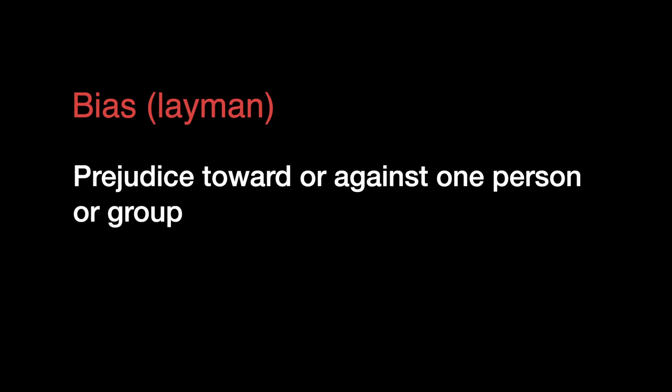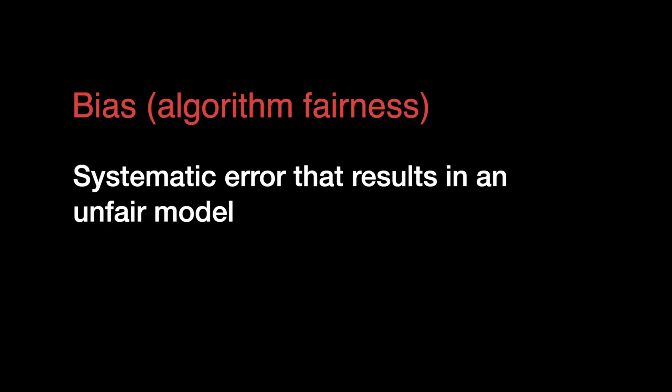Bias can be introduced during data collection, feature engineering, training, or even by the way you deploy your model. In day-to-day life, bias has a different definition: it is prejudiced for or against a person or group based on their characteristics. Similarly, fairness is the absence of any prejudice towards an individual or group. In algorithm fairness, bias can have yet another definition — it's a combination of the previous two. That is, bias is any error that has led a model to become prejudiced towards one person or a group. We can also call this type of bias unfairness.